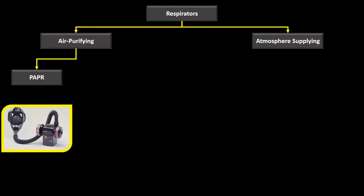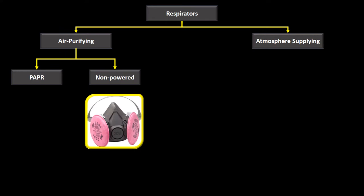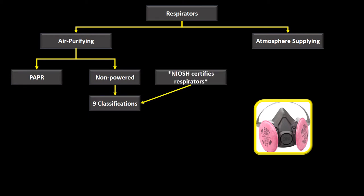Air purifying respirators break into two categories: powered air purifying respirators and non-powered air purifying respirators. Non-powered air purifying respirators are divided into nine classifications established and certified by NIOSH, the National Institute of Occupational Safety and Health.